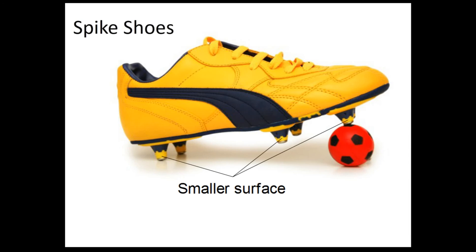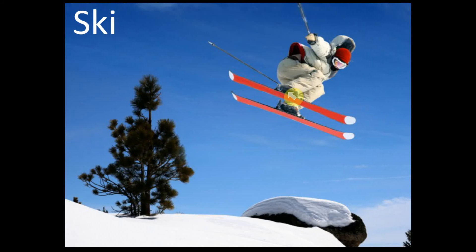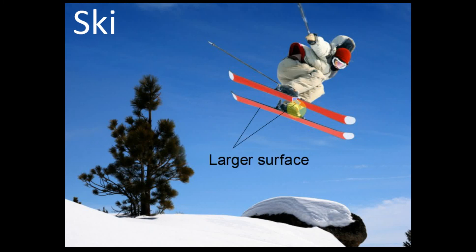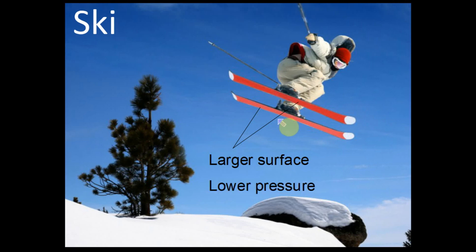If we walk on the blade on the ice, it's very hard for us to walk because our foot will sink into the ice. So if you want to move at high speed on the ice, you need to use ski shoes. The ski has a large surface, and when it has a large surface it can reduce the pressure — it has low pressure. So this is an application of low pressure: large surface, low pressure.